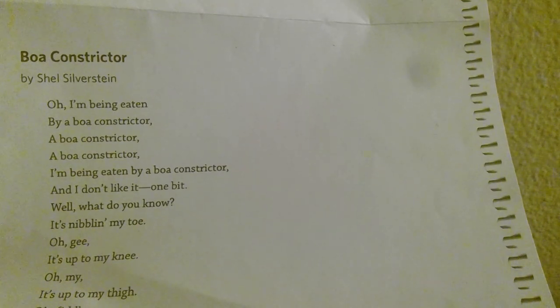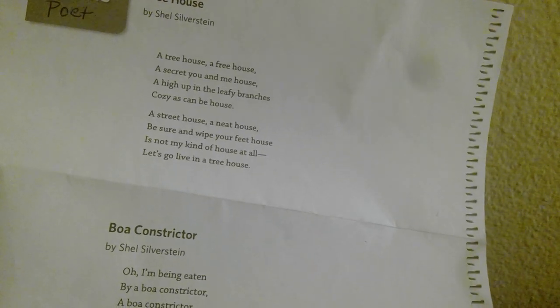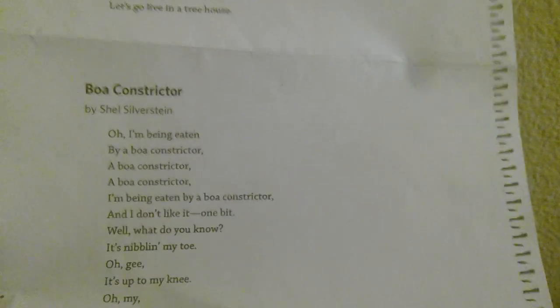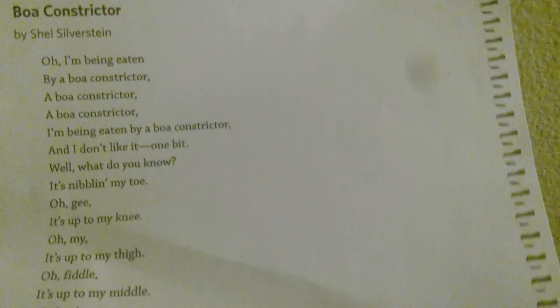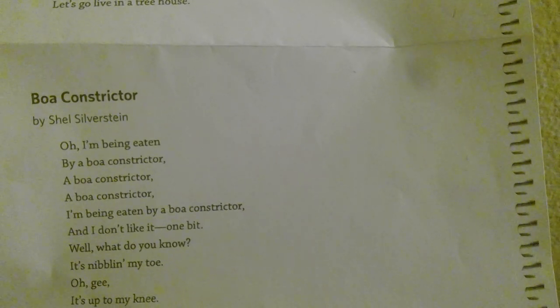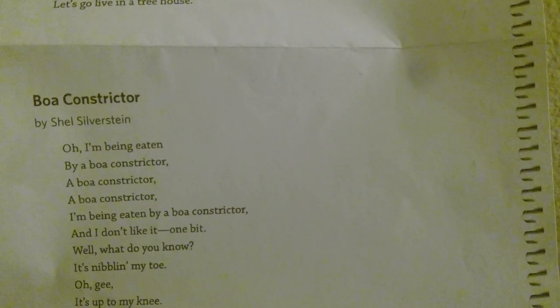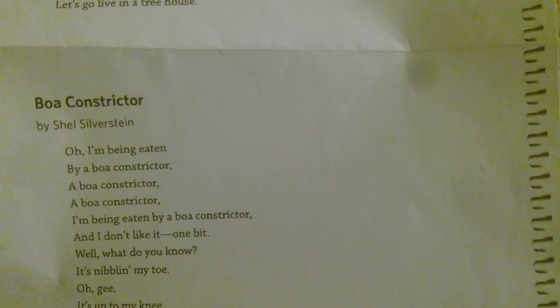Today I want you to write a poem. You can choose something like a favorite secret place that you like, as in the case of the treehouse, or think about an animal you can write about — but don't choose a treehouse or a boa constrictor of course. I have placed something in Seesaw for you to practice using your five senses. You can use that to practice, or just write your poem and take a picture and send it to me. You can write it on a sheet of paper or use the notepaper in Seesaw. I can't wait to read your poems.